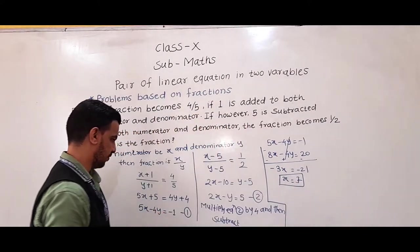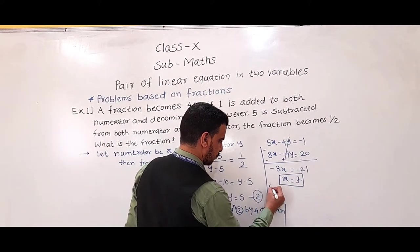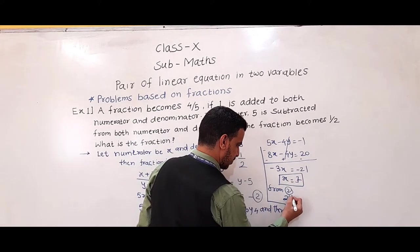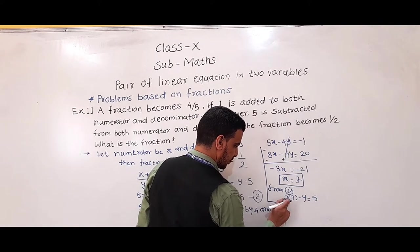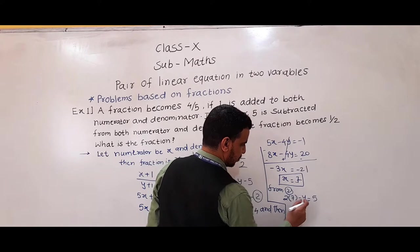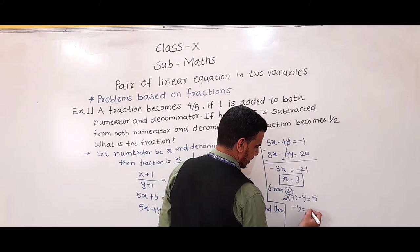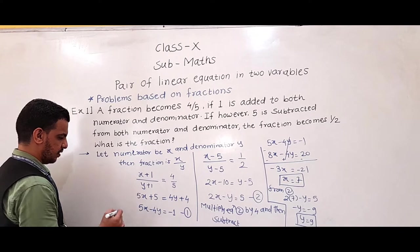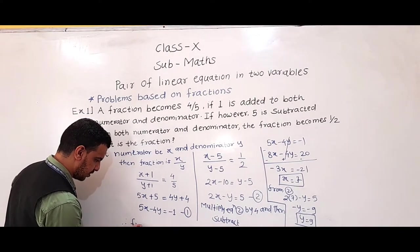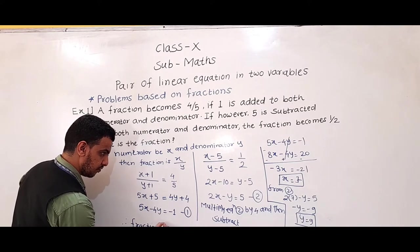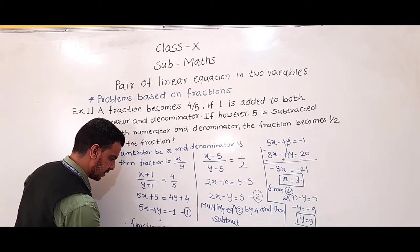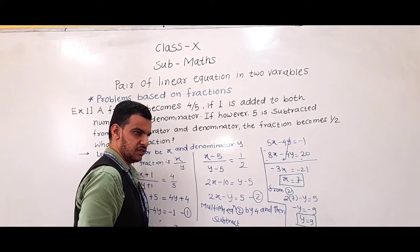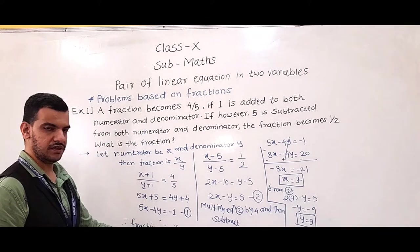So x = 7. If we put x = 7 into equation 2: 2 × 7 − y = 5, so 14 − y = 5, minus y = 5 − 14 = −9, so y = 9. Therefore x = 7, y = 9, and the required fraction is 7 by 9.